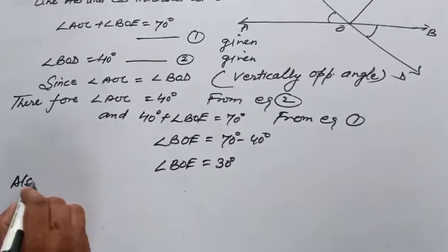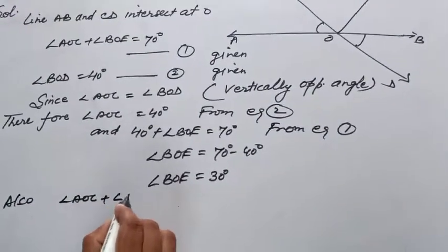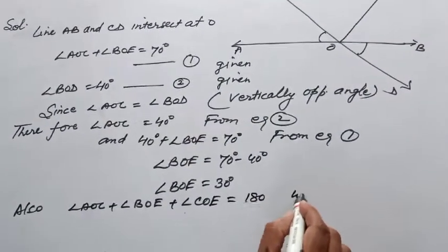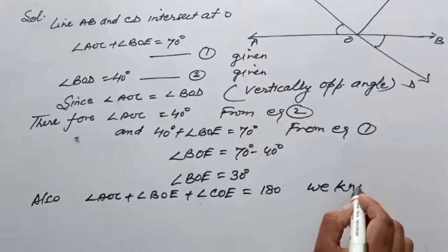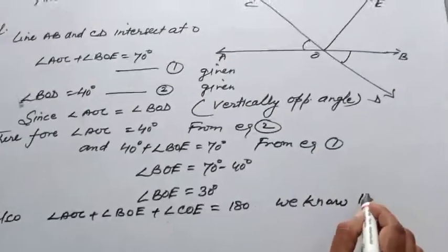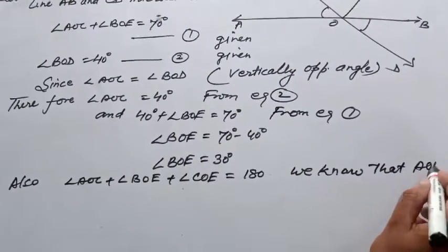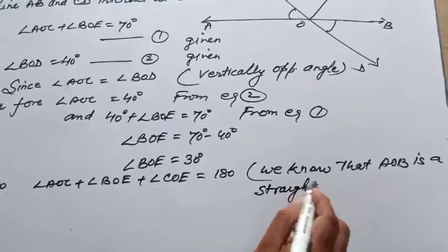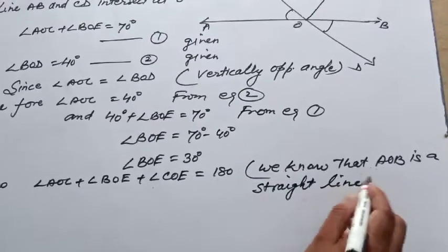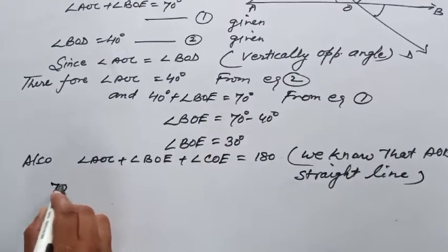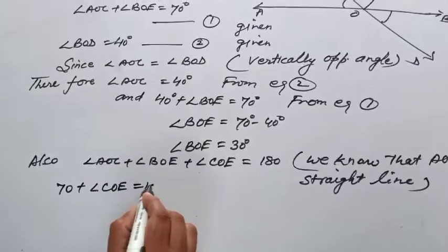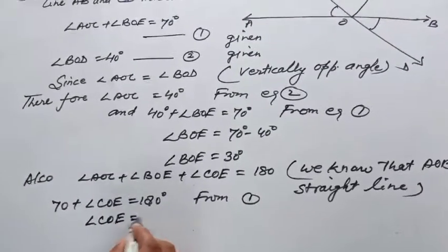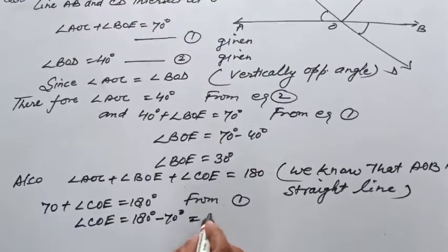Also, angle AOC plus angle BOE plus angle COE is equal to 180. We know that AOB is a straight line. 70 plus angle COE is equal to 180. From first, angle COE is equal to 180 minus 70 is equal to 110 degrees.